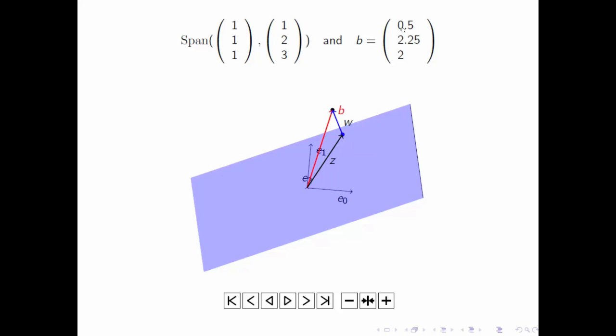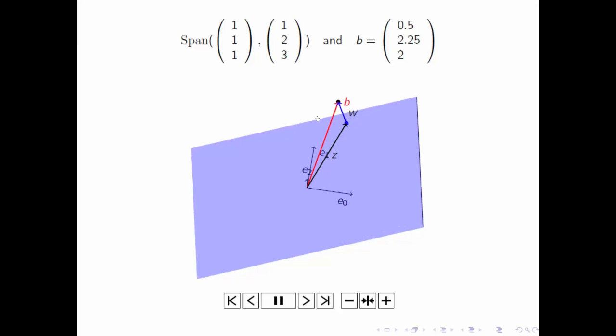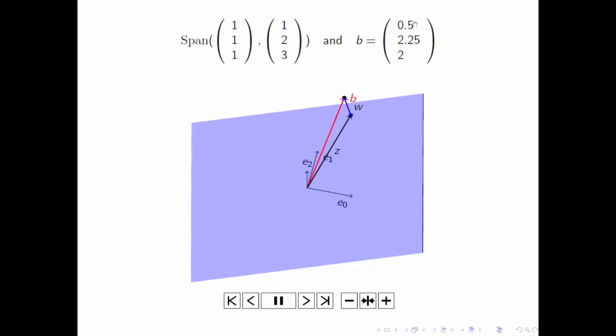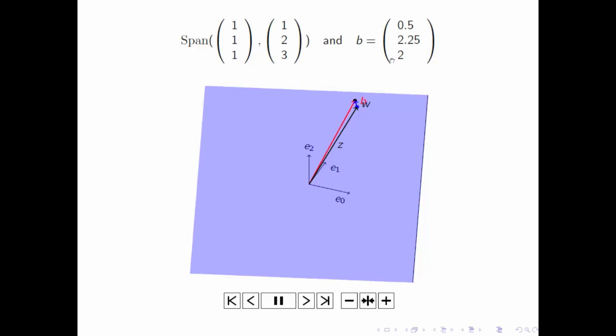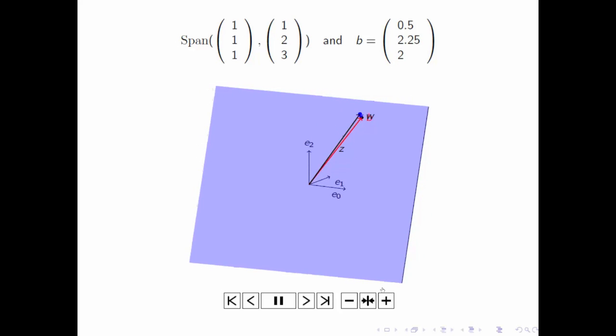And in addition to that, I also give the vector B, which is this red vector here, that points to this spot, this point that has coordinates 1/2, 3, 2 and 1/4, 2. So as we spin this, we can see better what's going on.